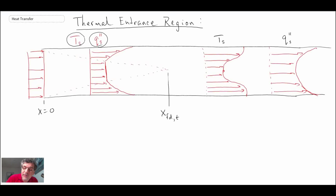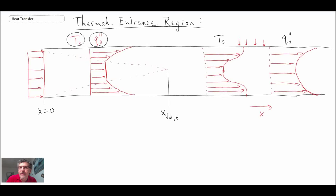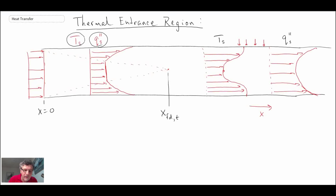The thing about the thermal boundary layer and the temperature profile is that if we continue to add energy — either through a constant temperature or a constant heat flux boundary condition — this temperature profile will continue to change as we move in the x direction. Unlike the fully developed velocity profile, which doesn't change, the temperature profile will continue to change. When we say fully developed thermally, we mean the uniform temperature no longer exists and the wall effects have been felt across the entire pipe radius.